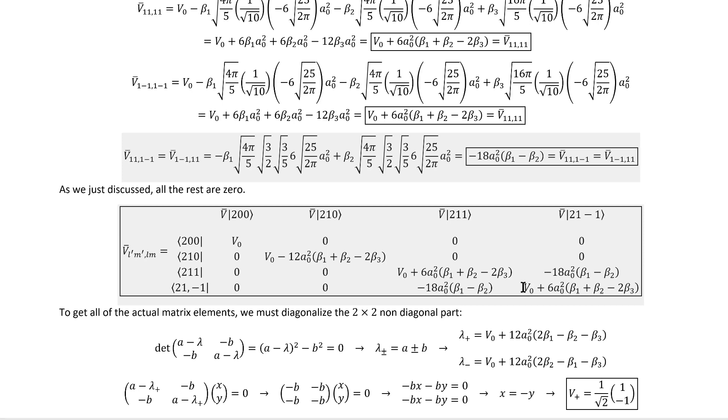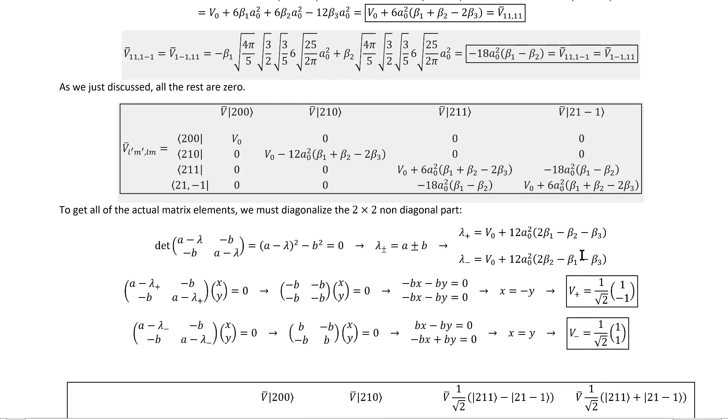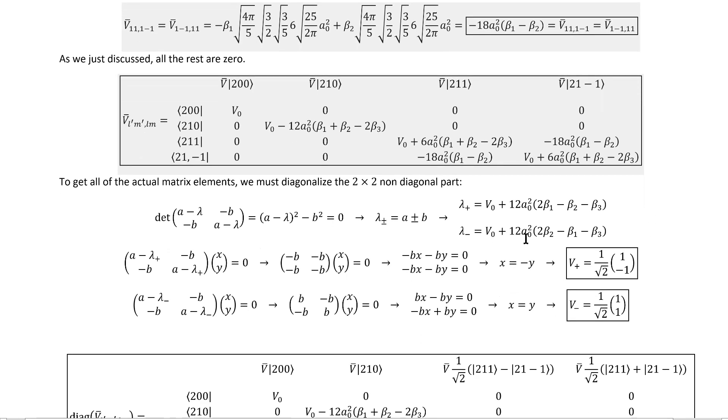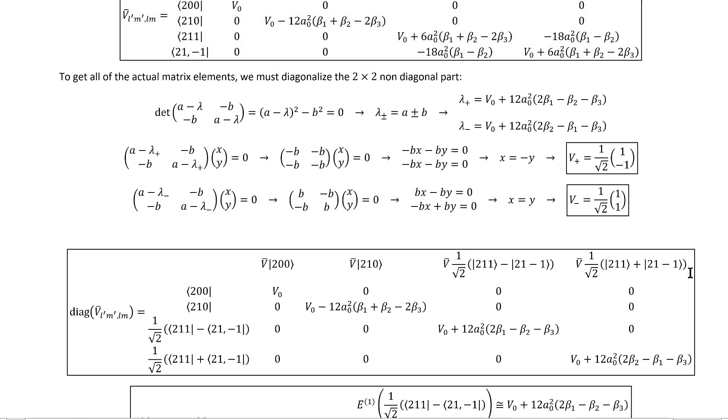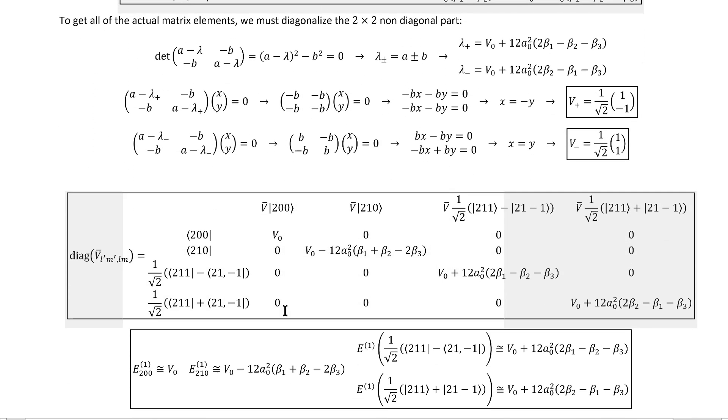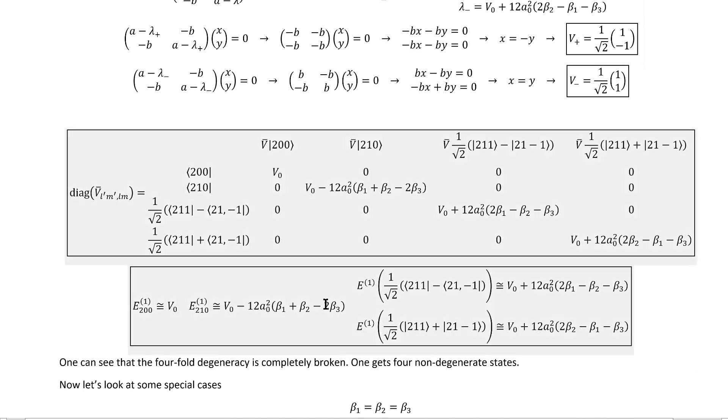All we have to do is address the fact that we're doing degenerate perturbation theory and the matrix has come out non-diagonal. Of course, the solution is to diagonalize it. Calculating the eigenvalues is pretty quick, as is the eigenvectors, and that gives us this diagonalized matrix, and therefore, these energy corrections.